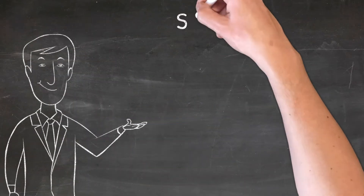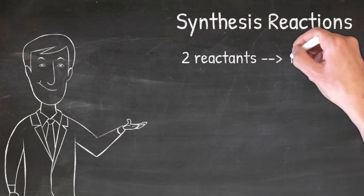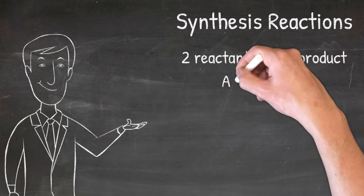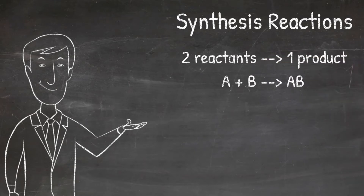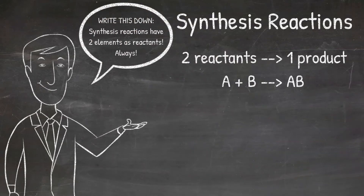The first reaction is synthesis reactions. Synthesis reactions are reactions that are made up of two reactants and one product. We can use letters to represent elements and compounds. A generic synthesis reaction can look something like this: A plus B yields AB, where A and B represent elements and AB represents the compound that is formed. The important thing to notice is that a synthesis reaction has two elements as reactants. Write this down as it will be important later.